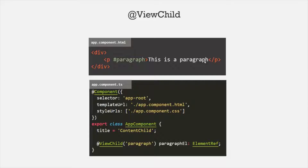In simple terms, we can access the view of a component using @ViewChild decorator. This HTML is the view for this AppComponent class, and we can access that view using @ViewChild.